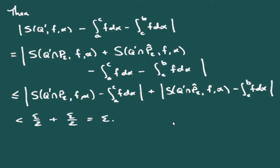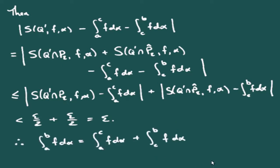By how we chose the partitions, each grouped difference is less than ε/2, so their sum is less than ε. This gives us the conclusion: if the integrals from A to C and from C to B both exist, their sum equals the integral from A to B of f dα.